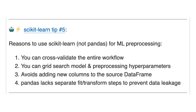Reason number four: pandas lacks separate fit and transform steps to prevent data leakage. Scikit-learn has fit and transform, so you can learn something from the training data and apply it to both the training and testing data. It would be extremely complicated in pandas to duplicate this — I'm thinking 10 times as much code, and way more complicated. Pandas is simply not built around a workflow of splitting data, learning something from one piece, and applying it to both pieces, especially for cross-validation. So, if you are doing machine learning, you are best served by learning how to do your preprocessing in scikit-learn and not in pandas.